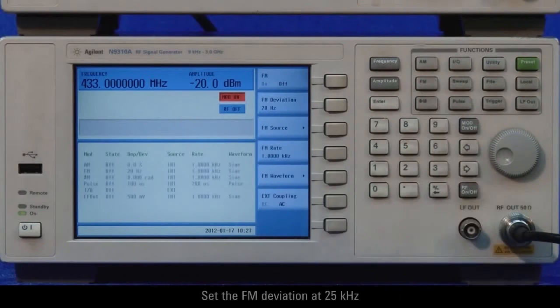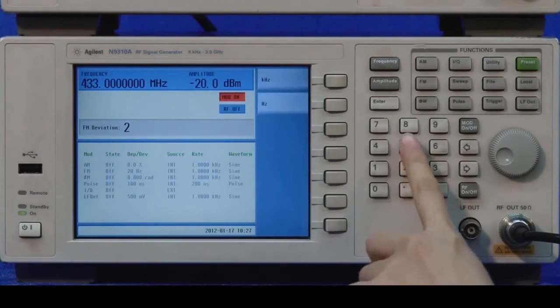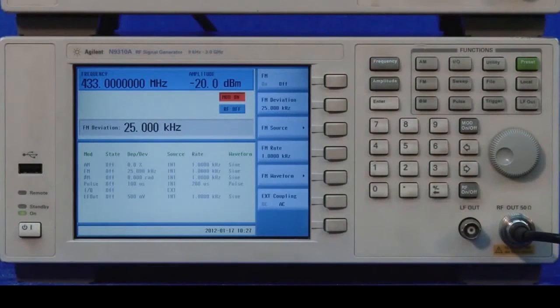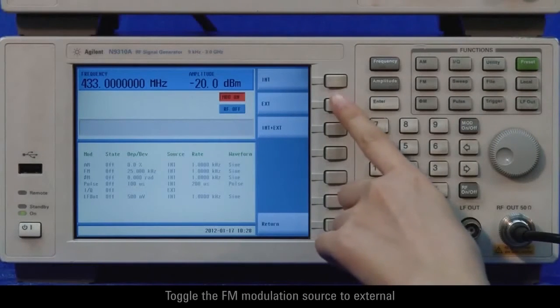Set the FM deviation at 25 kilohertz. Toggle the FM Modulation Source to External.